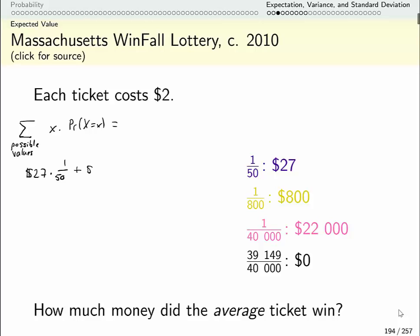Another possible value is $800 and the number of tickets that I expect to win that are 1 in 800 of every ticket. Another possible value is $22,000 and I expect if I got 40,000 tickets I expect 1 of them would get that. If I had 80,000 I would expect 2 of them and so on, and then $0 times, well it doesn't really matter what the probability is because we're multiplying it by 0, but for the sake of being thorough, 39,149 divided by 40,000.